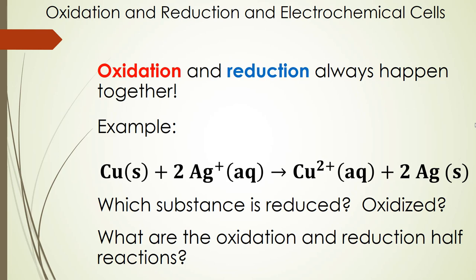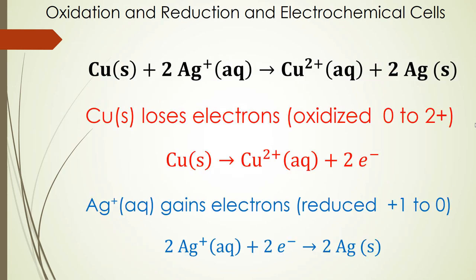We're going to separate out the half reactions and look at them separately. We have our overall reaction at the top of the slide. In this case we can see that copper metal loses electrons and so it's going to be oxidized to copper 2+ ions and just as a preview this generally happens in the anode compartment of the electrochemical cell.